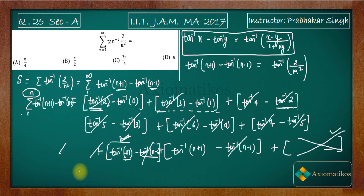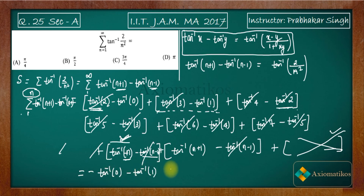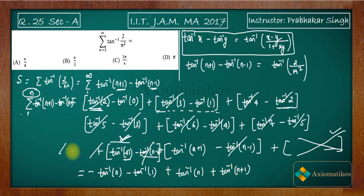Finally, after all the cancellations, the sum up to N is: -tan⁻¹0 - tan⁻¹1 + tan⁻¹n + tan⁻¹(n+1). Now, S is defined as the limit as n → ∞ of this partial sum.